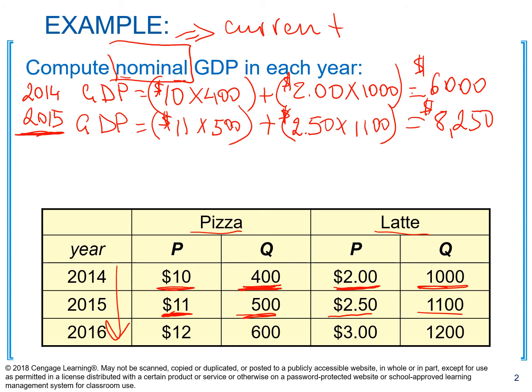Since this is nominal GDP, what contributed to that increase from year to year? You can say it's either prices or quantities, or actually both. Because we take into consideration current prices and current quantities, all of them may change and all can contribute to increasing our GDP.